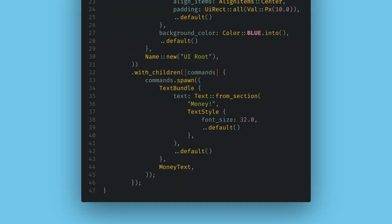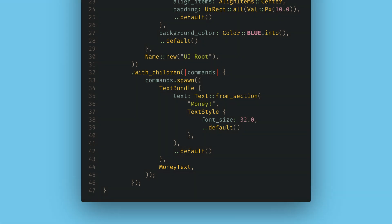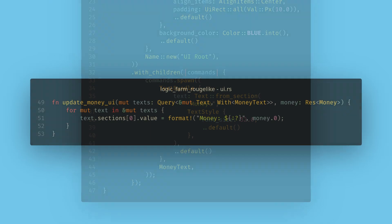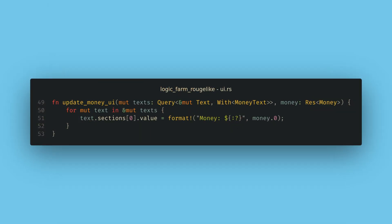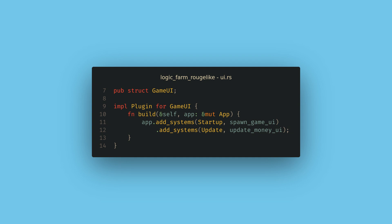I'm going to leave the style as default here, but I'm going to add a tag component to the text so that we can query for it and easily change the text in our next system. Creating tag components like this is a great way to mark different UI components for editing. Now I just need to create a system that can mutate the text component and read our money resource. Then, in this system, I just set the section with our money value using Rust string formatting. Text can be constructed out of multiple sections if you want to have some words be different colors or style, and the Bevy examples will show you how to do this. For us however, this is a one section text field. Now I can add the spawn game UI system to the startup schedule, and the update money UI system to the update schedule in our plugin.